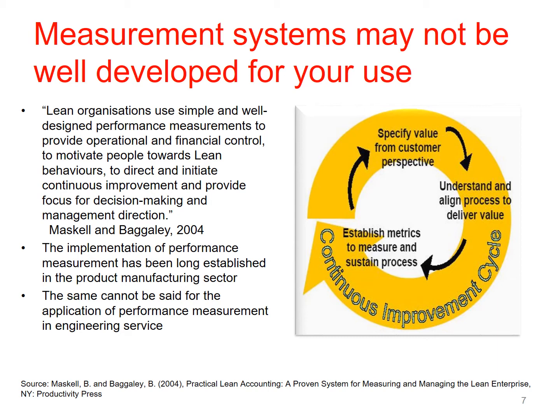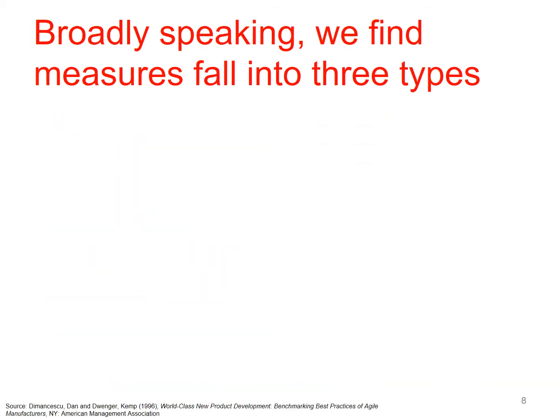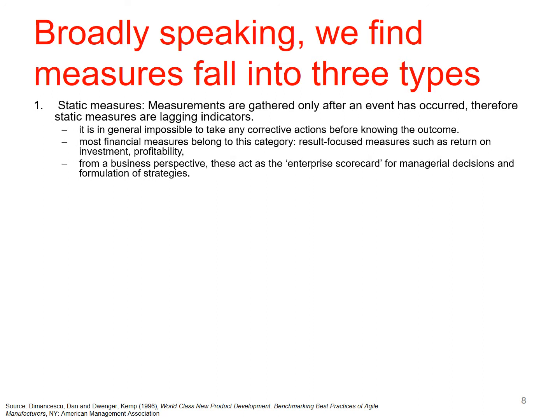The implementation of performance measurements has long been established in product manufacturing. The same cannot be said for service. Broadly speaking, measures fall into three types. Static measures are gathered only after an event has occurred — they're lagging indicators. It is in general impossible to make corrective actions before knowing the outcome, because these are reporting on events that have already happened. Most financial measures belong to this category — results-focused measures such as return on investment, profitability, etc. — reported after the fact, sometimes up to a year after.